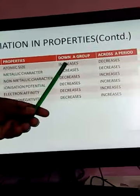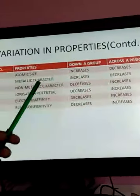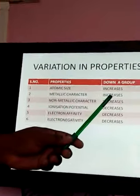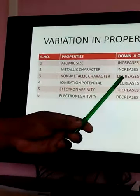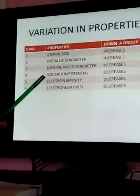Just look at this here, atomic size down the group increases, across the period decreases, metallic character increases down the group and decreases across the period, non-metallic character decreases down the group and across the period increases.